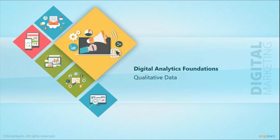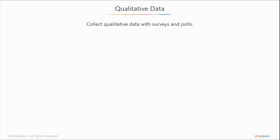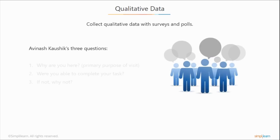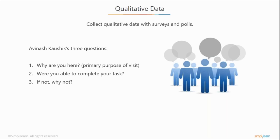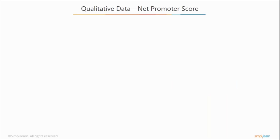The next part is qualitative data — data that is more touchy-feely, or data that tells a story. Qualitative data is best obtained from visitors to your site through surveys and polls. There are three questions you want to answer with your data. Remember, people have short attention spans, so you don't want to ask too many questions. Stick to things like: Why are you here? Were you able to complete your task? If not, why not?